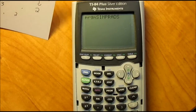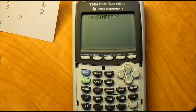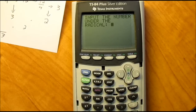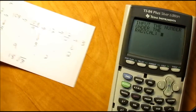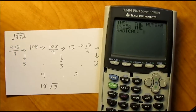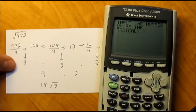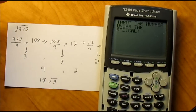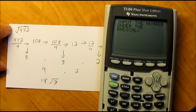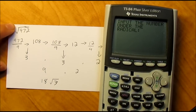So it's a pretty simple program. We're going to go ahead and run it here. It says 'input the number under the radical.' For example purposes, I have one worked out over here. So let's say that you were given the square root of 972.